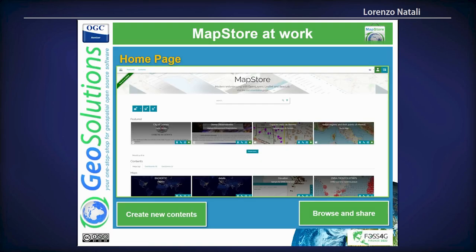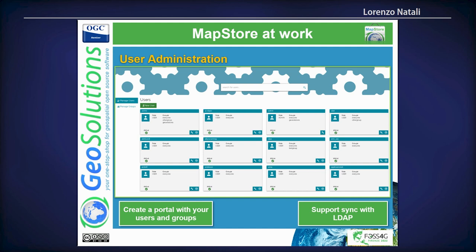The MapStore application has a home page — the first landing page when you start the application — and from this page you can browse, share, and search for your contents. MapStore holds many content types. You can share these contents with users. For this reason, MapStore has a user management system that the administrator can handle, and it can also be configured to link to LDAP in order to use your company users without having to create them separately.